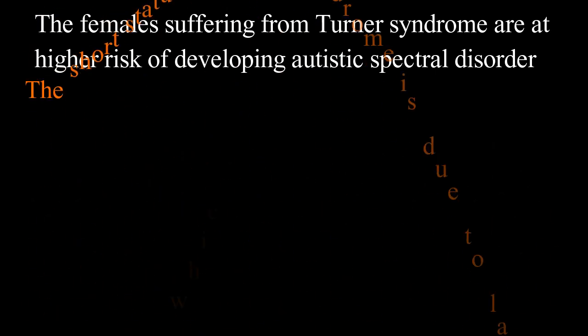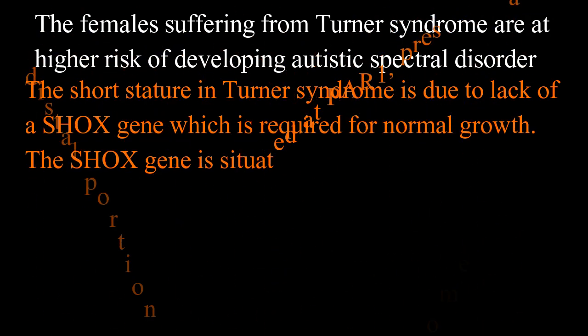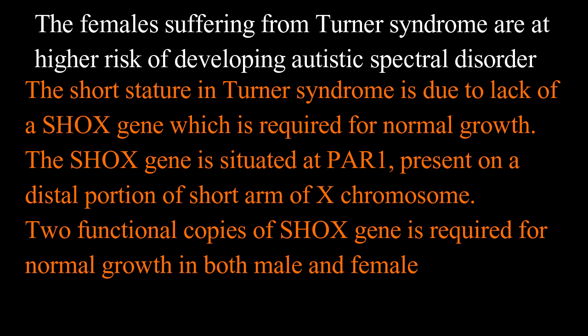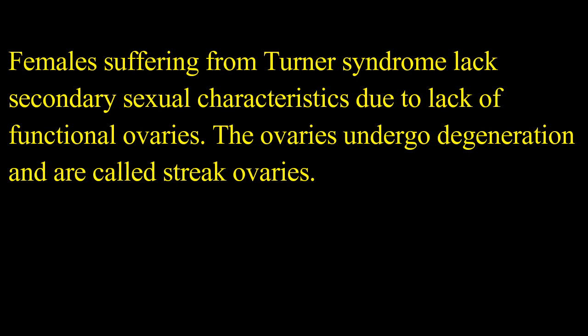The short stature in Turner syndrome is due to lack of the SHOX gene, which is required for normal growth. The SHOX gene is situated at PAR1, present on the distal portion of the short arm of the X chromosome. Two functional copies of the SHOX gene are required for normal growth in both males and females. Though males have only a single X chromosome, they have a gene equivalent to SHOX. Females with Turner syndrome lack secondary sexual characteristics due to lack of functional ovaries; the ovaries undergo degeneration and are called streak ovaries.